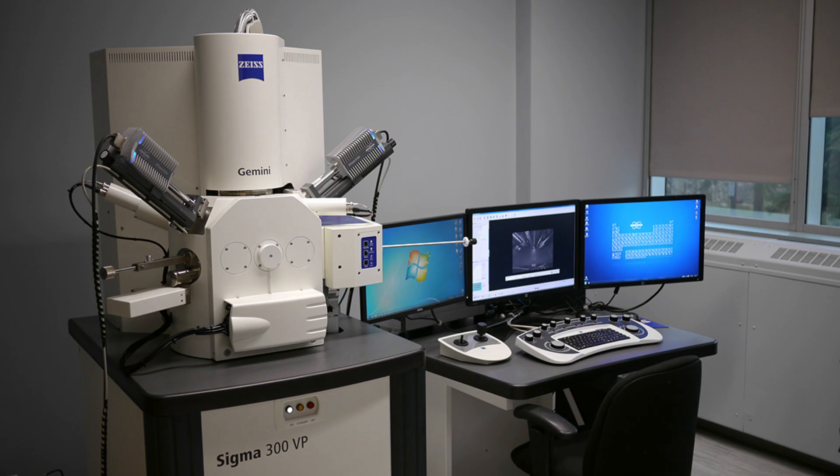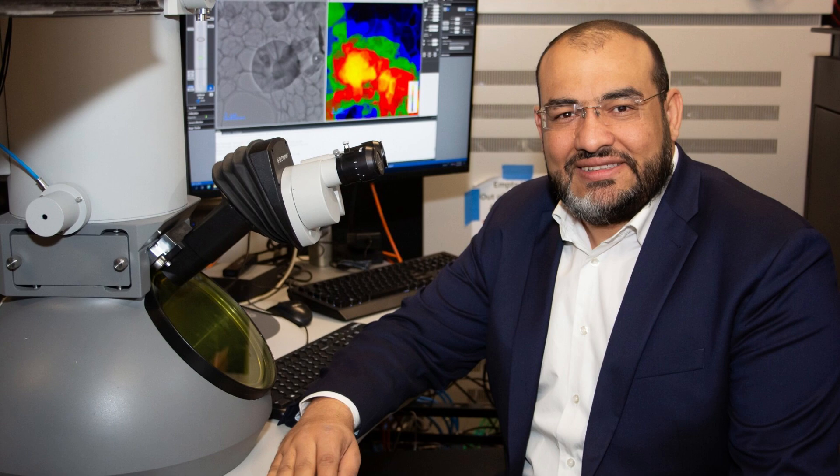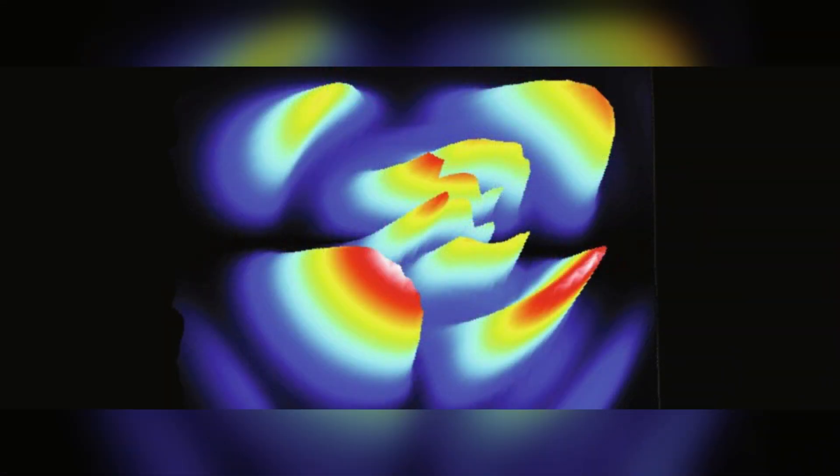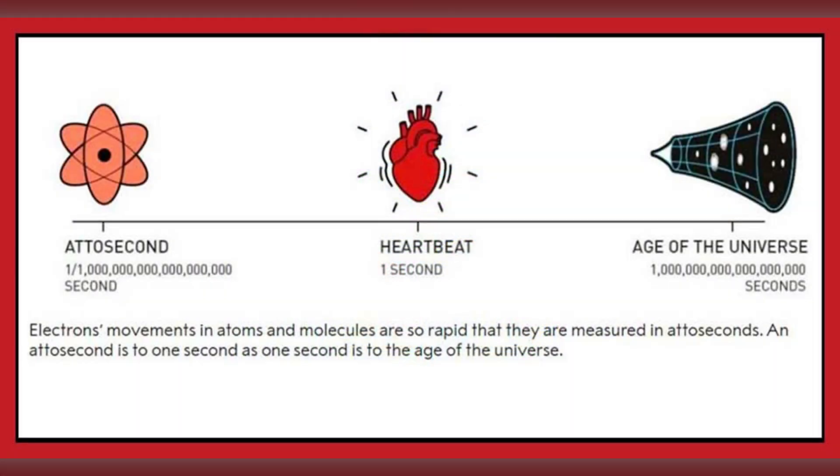The development of a new electron microscope marks a monumental breakthrough in the field of microscopy. Called the ATTO microscope, this device can capture the movement of electrons in real time, achieving temporal resolution at the attosecond scale, one quintillionth of a second.